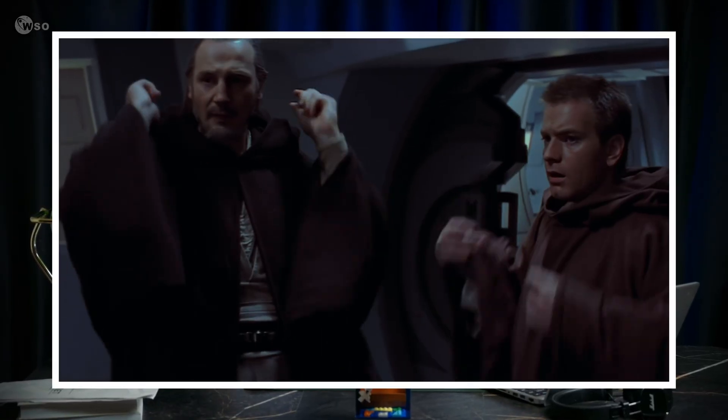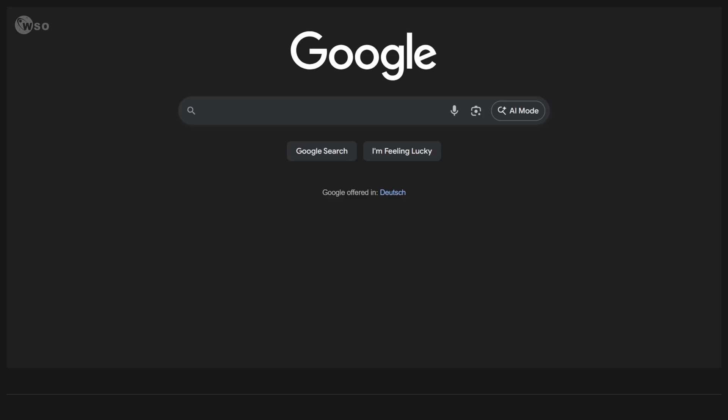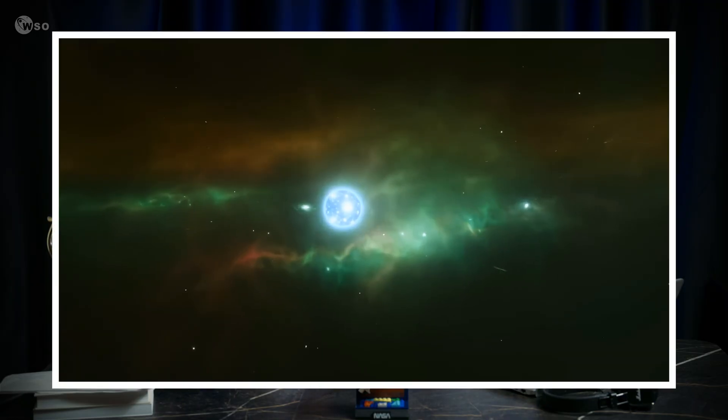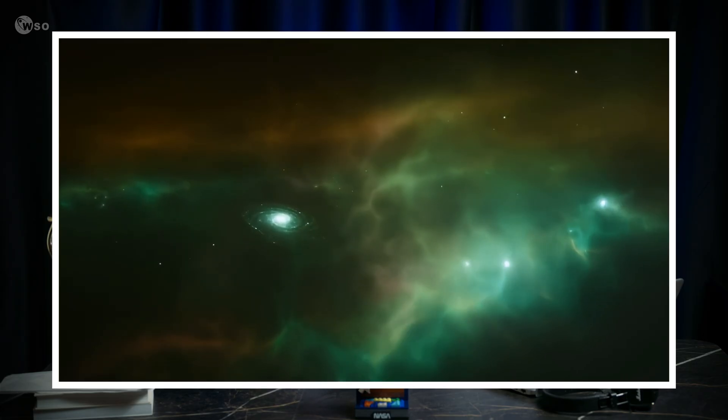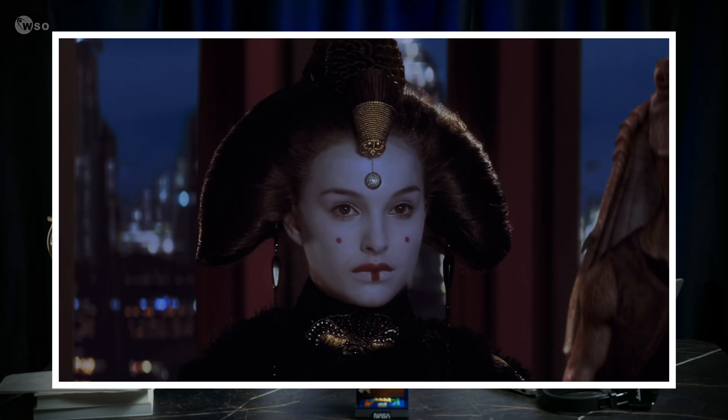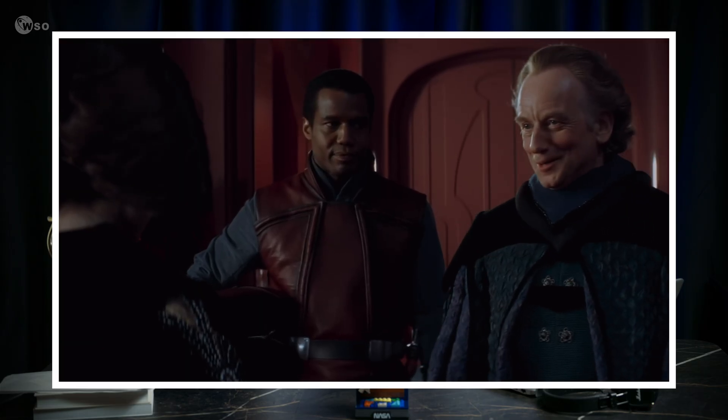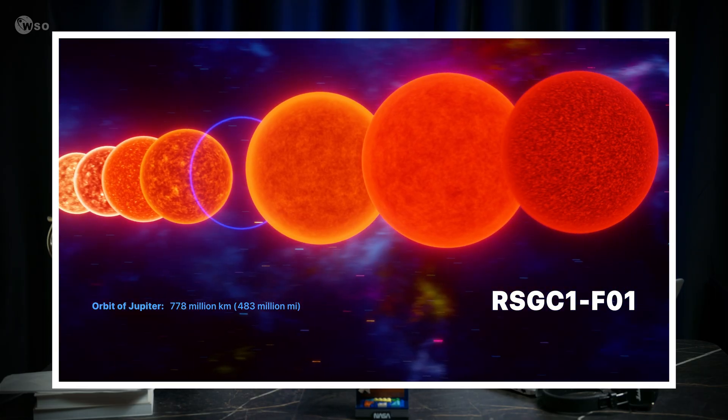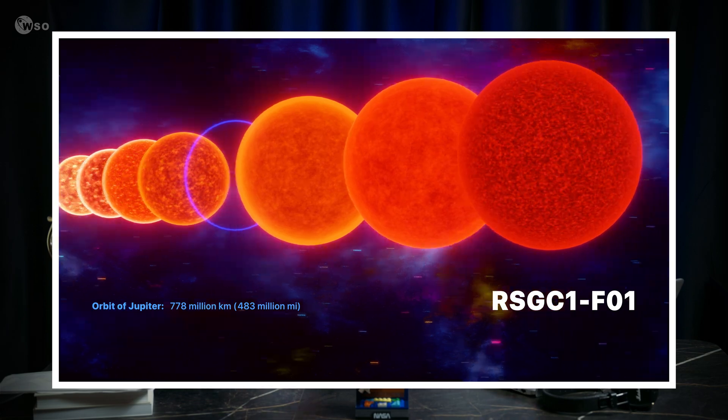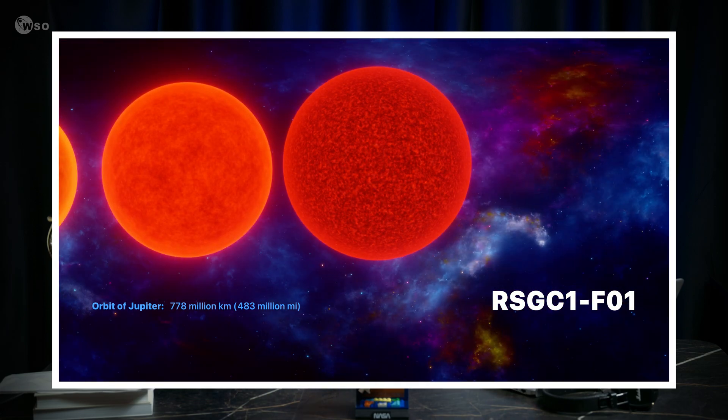If the old king is dead, who is the new king? If we remove Stephenson 2-18 from the throne, the crown goes to a star that fits both observations and stellar evolutionary models. Meet the significantly accurate largest star of the universe: Red Supergiant Cluster 1, F01.